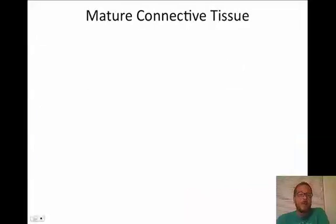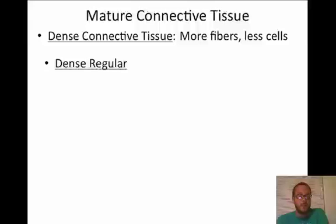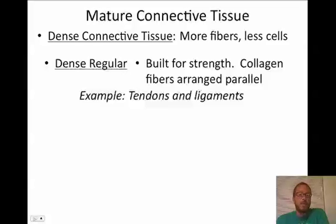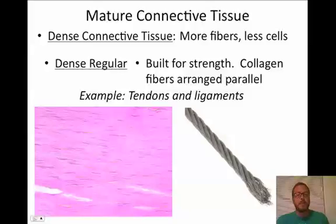Now let's look at dense connective tissue — you see more fibers and less cells. The first type is dense regular connective tissue, built for strength in one direction. The collagen fibers are arranged in parallel, so it can be pulled in one or two directions but not all directions. Examples are tendons and ligaments — your Achilles tendon, for instance, only gets pulled by the calf muscles in one direction, never laterally. You can see all the fibers are parallel, with little dark nuclei embedded between them. A good analogy is a steel braided cable — strong in one direction, but it would tease apart if pulled laterally.